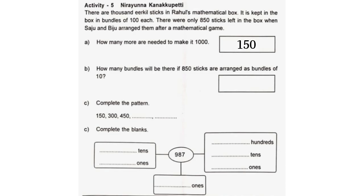B. How many bundles will there be if 850 sticks are arranged as bundles of 10? Answer: 85. C. Complete the pattern. Complete the blanks: 987 — 9 hundreds, 8 tens, 7 ones; 987 ones; 9 hundreds 81 tens 7 ones.